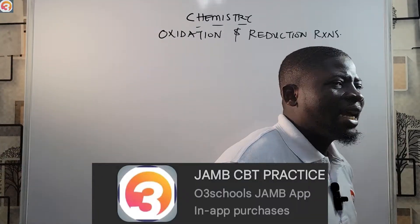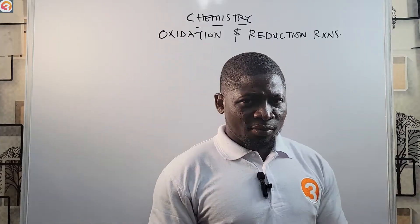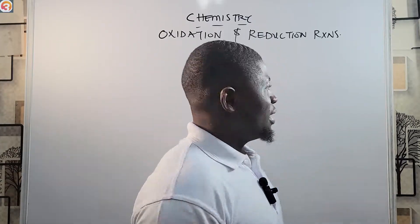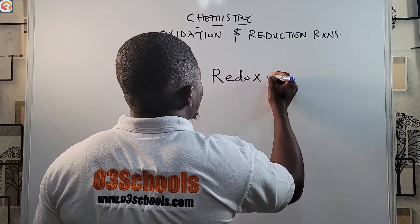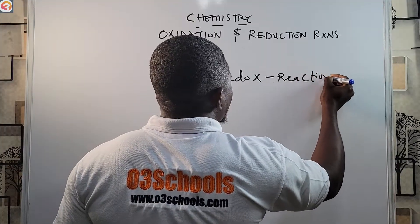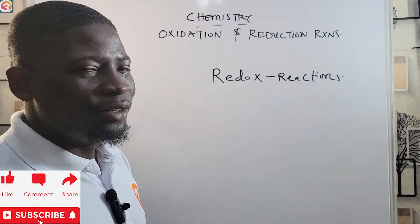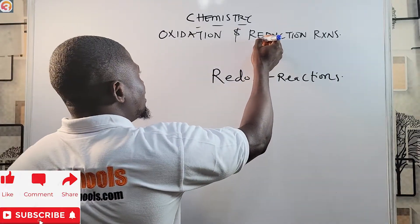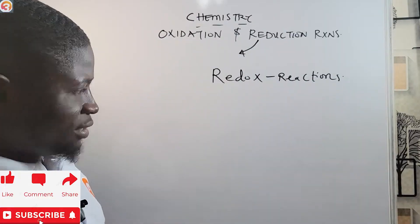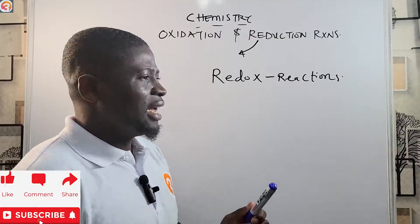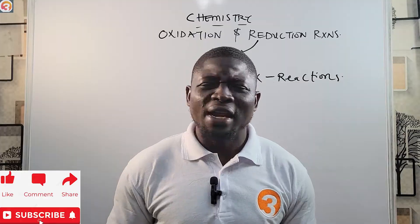Now let's look at oxidation and reduction reactions. Oxidation and reduction reactions together are called redox reactions. We take 'red' from reduction and 'ox' from oxidation to get 'redox.' Oxidation and reduction reactions are a part of nearly all reactions in chemistry.